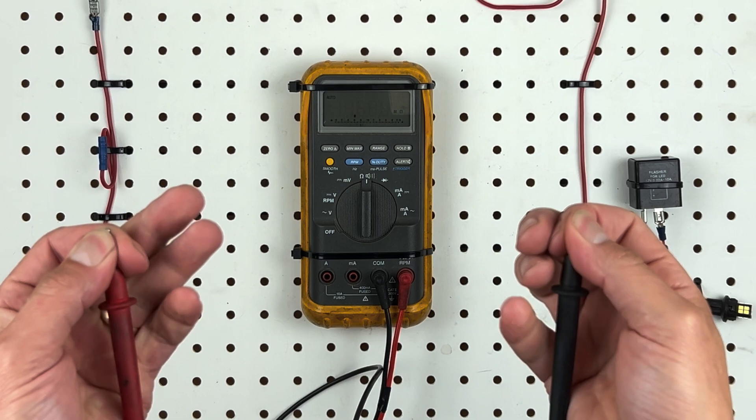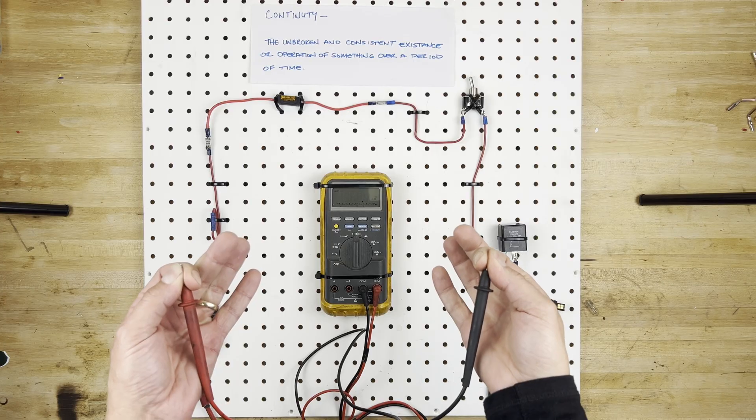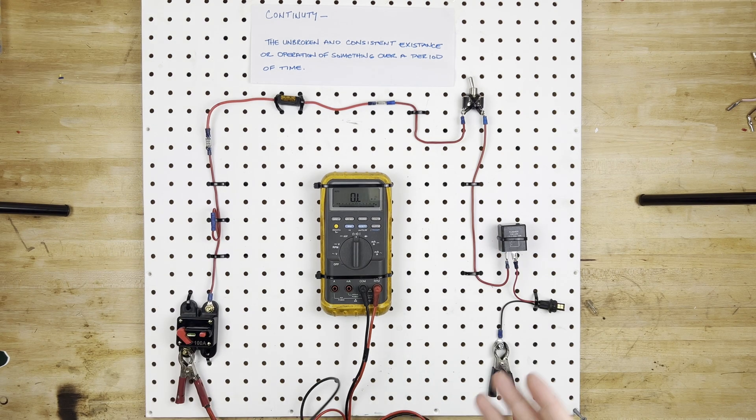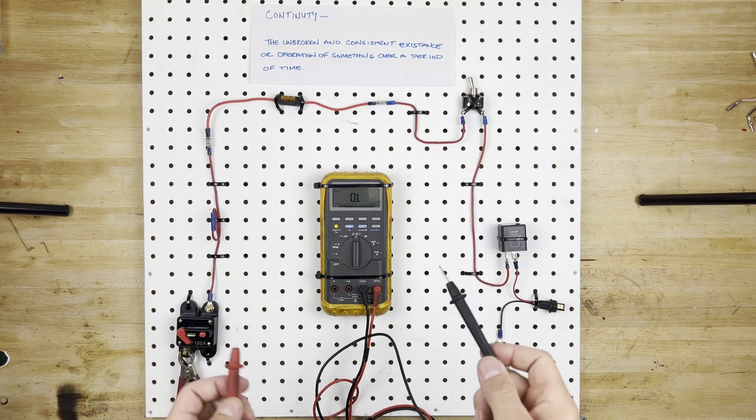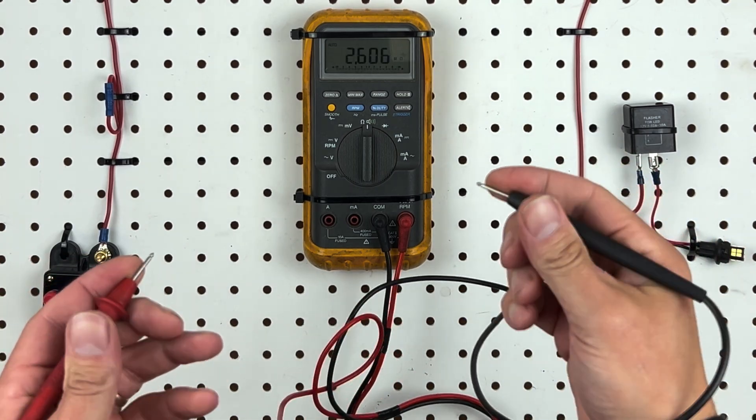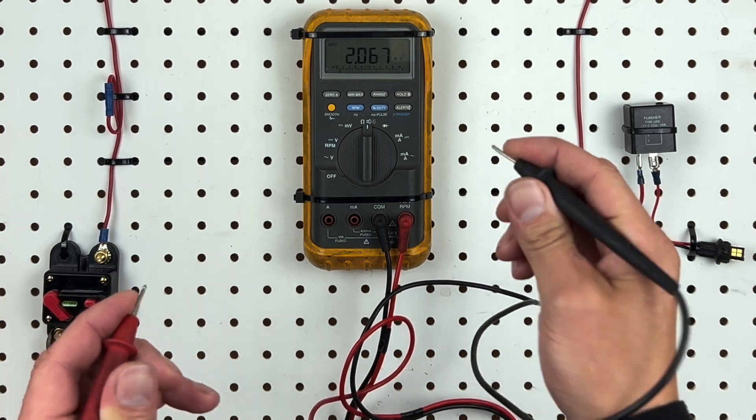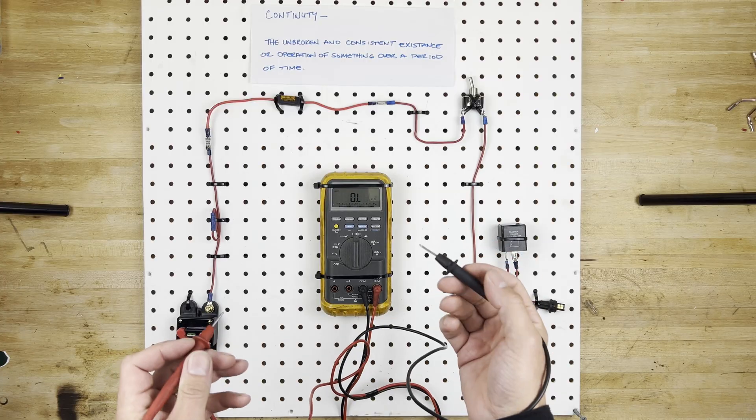You'll notice if I touch them, it actually is reading the resistance through my body from one fingertip to the other. And that's something that you have to watch out for when you're checking for continuity, because if you are touching these terminals really closely, you may actually be measuring the resistance through your body and not through the actual wiring harness.